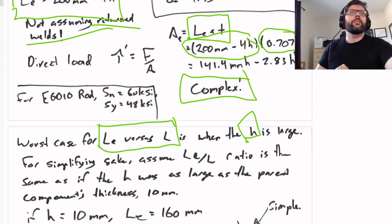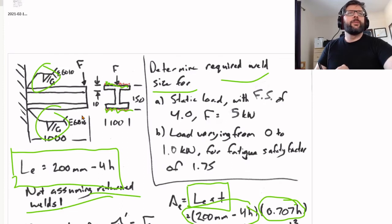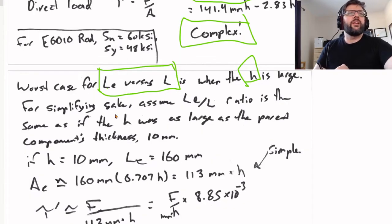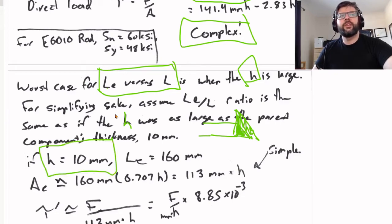If we assume a relatively large H and find out how that affects the effective length versus the length, we can use that ratio as the worst case scenario. As long as we end up at the end calculating a value that is reasonably close to or less than that, the more accurate our assumption is. If you look back at the I-beam, the thickness of the flanges there is 10 millimeters.